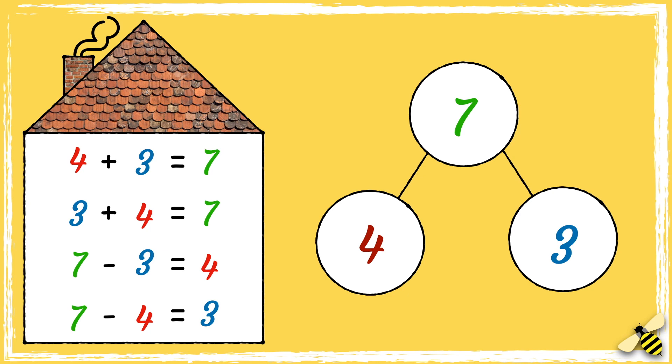This is called a fact family. We have two number sentences that show addition and two number sentences that show subtraction.